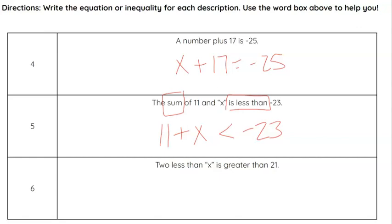Alright, last one. 2, less than x. So now again, that's that flip-flop word we're subtracting. So it's x minus 2. And then is greater than, so greater than symbol, 21.